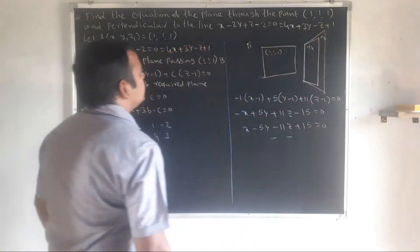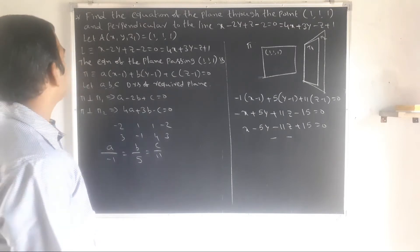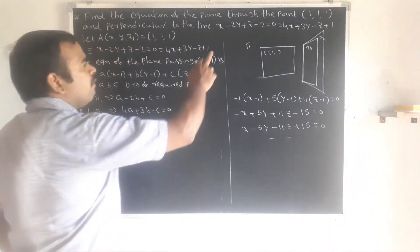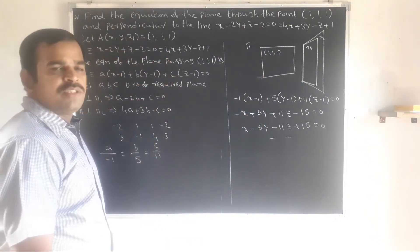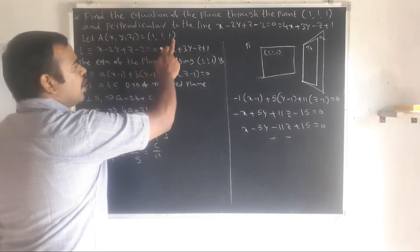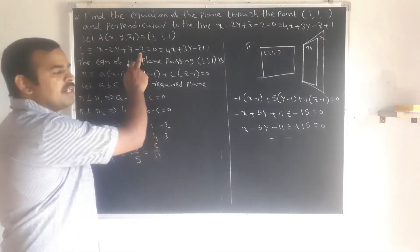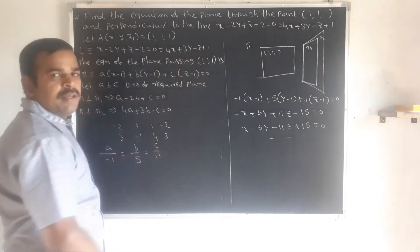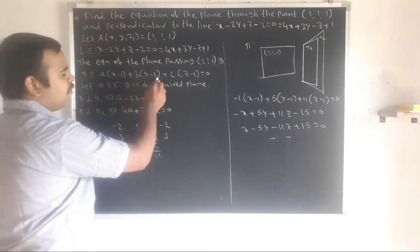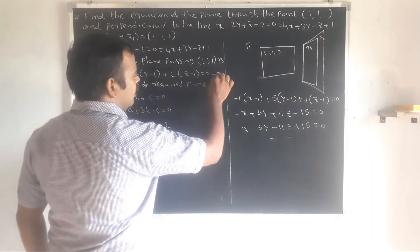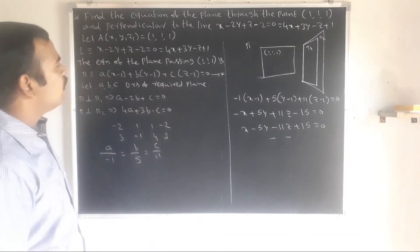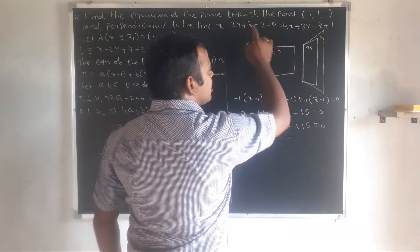Another problem: find the equation of the plane through the point (1, 1, 1) and perpendicular to the given line. The line is given in unsymmetric form as the intersection of two planes: 2x minus y plus z minus 2 equal to 0 and 4x plus 3y minus z plus 1 equal to 0. The plane equation passing through point (x1, y1, z1) equal to (1, 1, 1) is: a(x minus 1) plus b(y minus 1) plus c(z minus 1) equal to 0, where a, b, c are the direction ratios of the required plane.